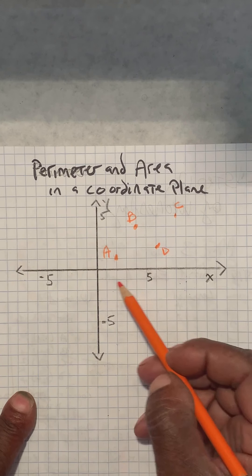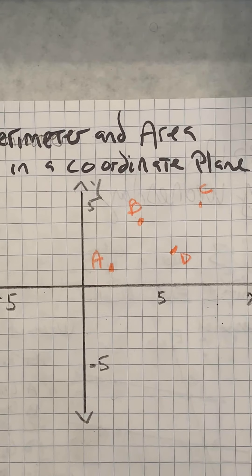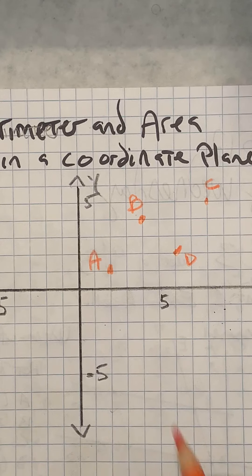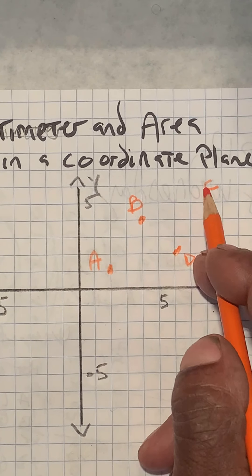So you see here in this graph I've drawn some points, plotted some points: A, B, C, and D.